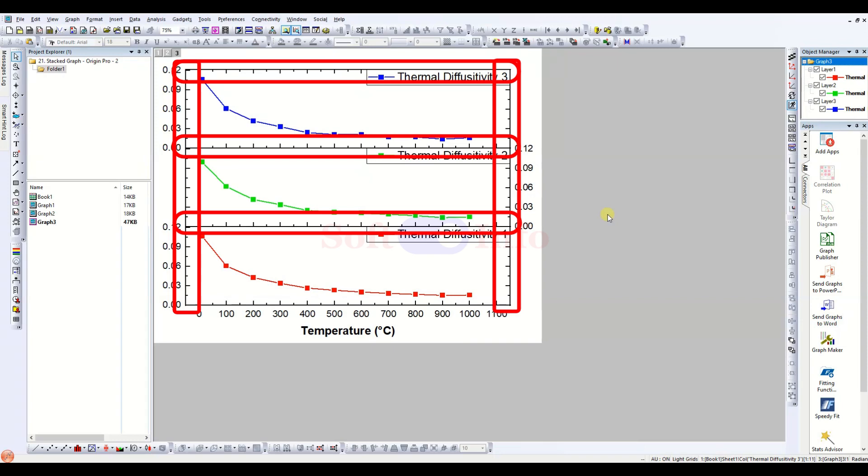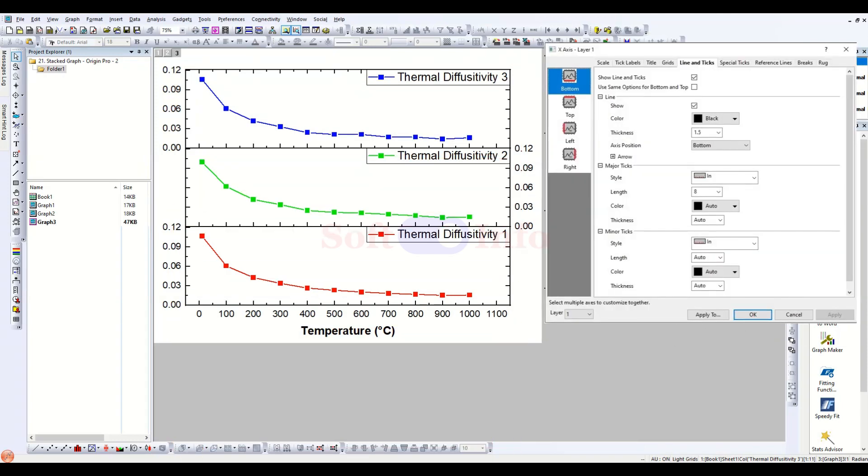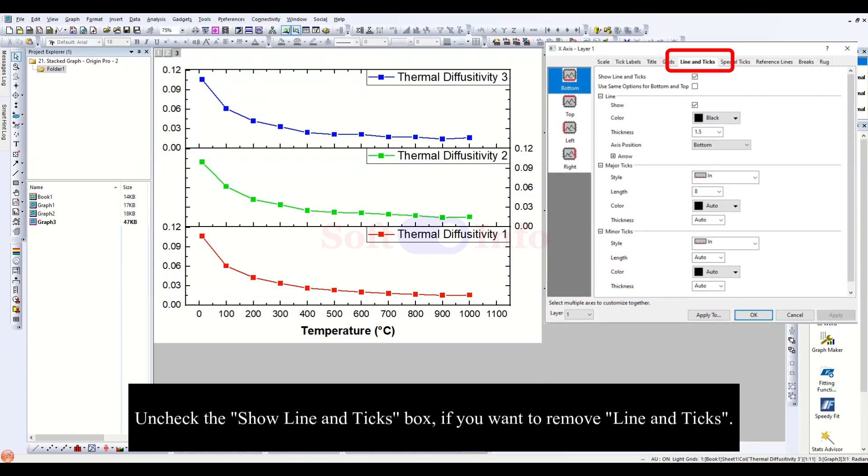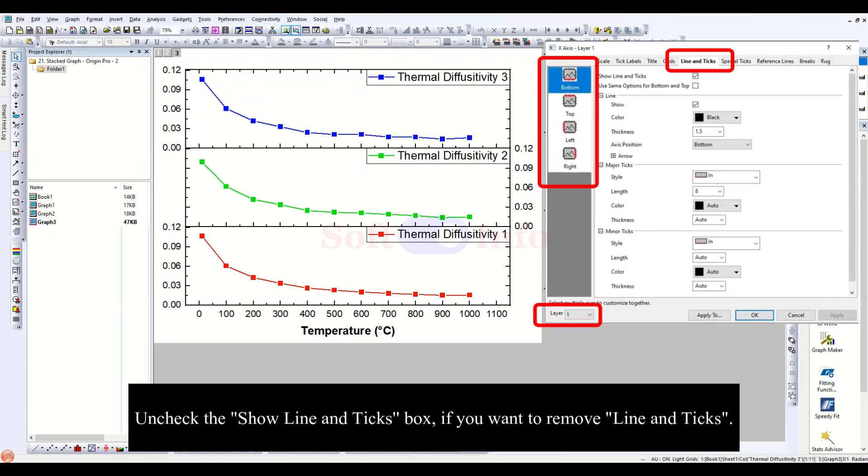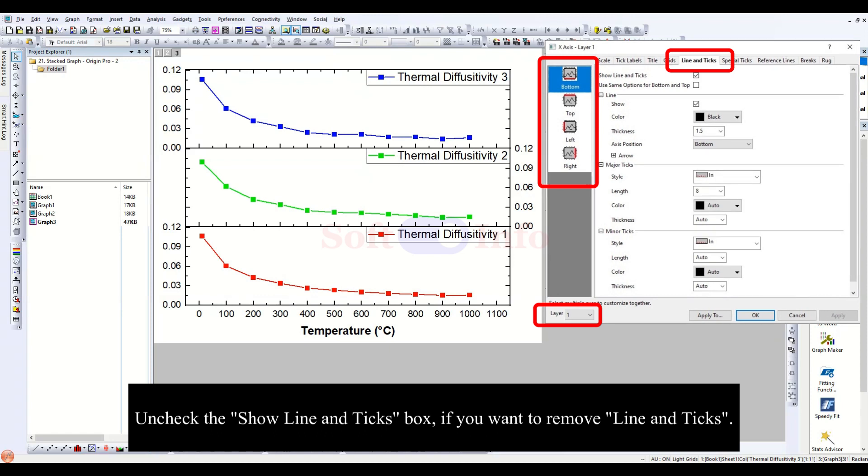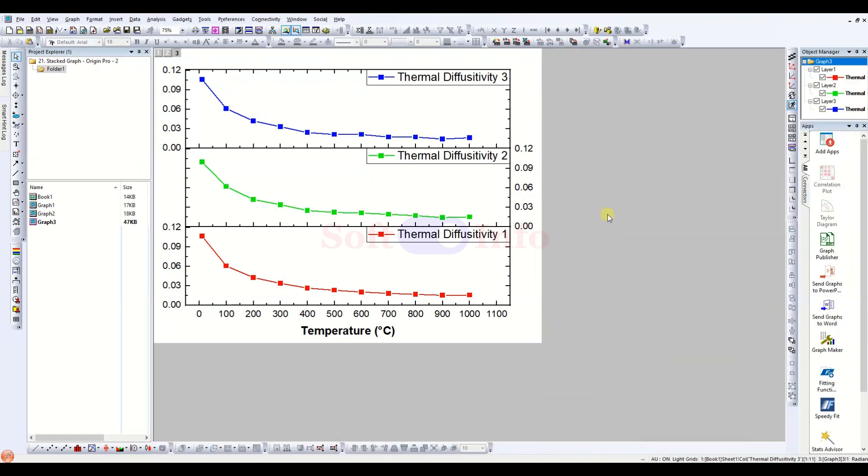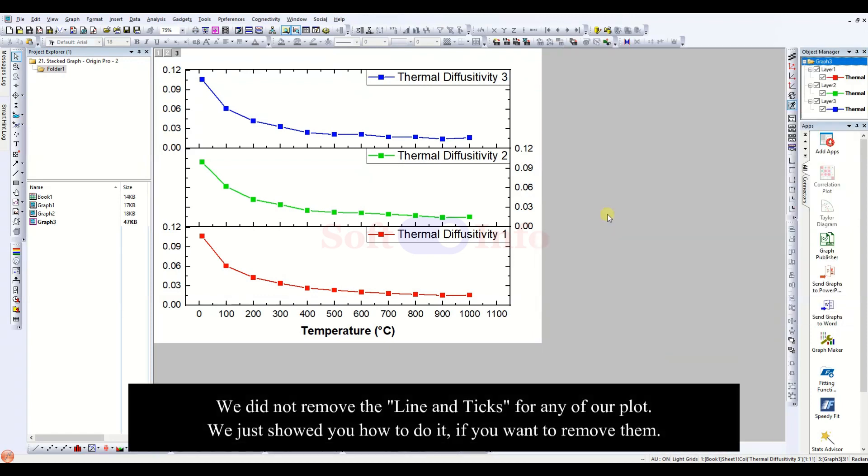Additionally, you have the option to add or remove line and tick labels from specific plots by selecting the Line and Ticks tab and choosing the desired plot layer. And there you have it—these are the final results for the required stacked plot.